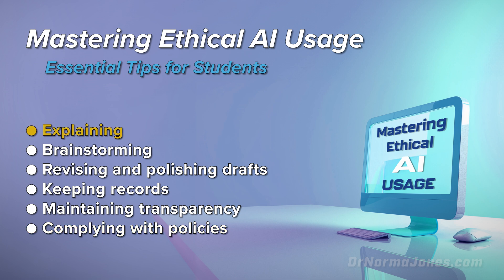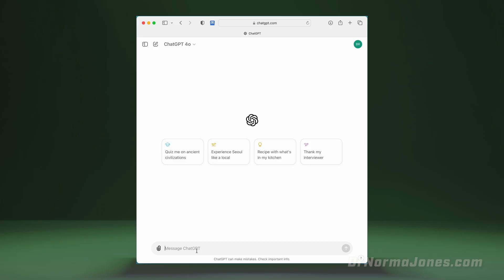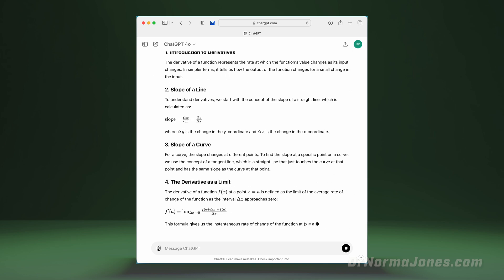Let's get started with using AI to explain things. AI models, such as ChatGPT, are extremely helpful in explaining concepts that you may not be familiar with. Specifically, AI tools can help you understand complex materials by breaking them down into simpler terms. For example, if you're struggling with a math concept like calculus, an AI tool can provide step-by-step explanations that make it easier to grasp. A sample prompt is: 'Can you explain the concept of derivatives in calculus step-by-step?' Then, you could ask for details of each step in a follow-up question.